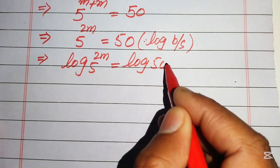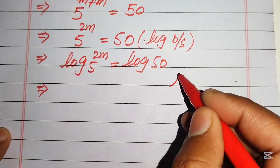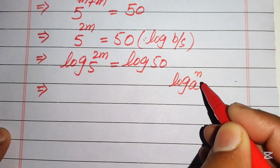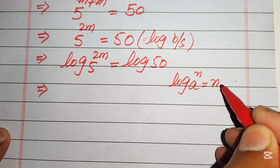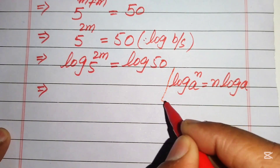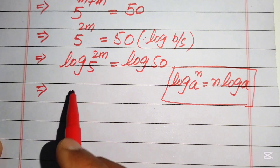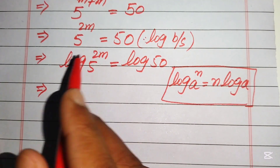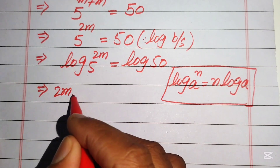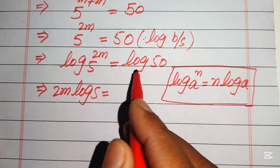Now we use the log power property: log(a^n) equals n times log(a). Applying this to the left-hand side, we move 2m to the front of the log, giving us 2m times log(5) equals log(50).